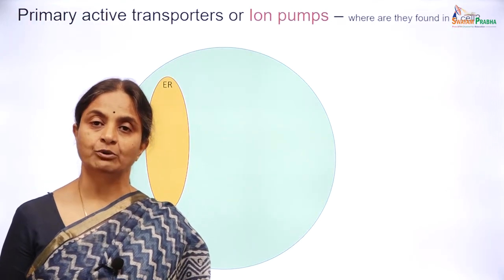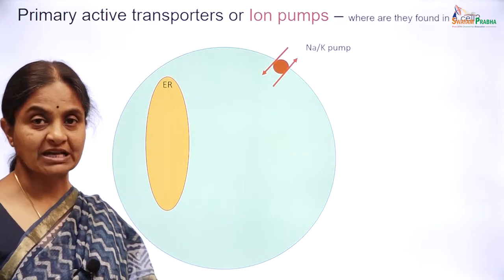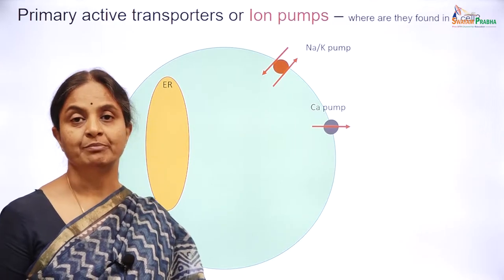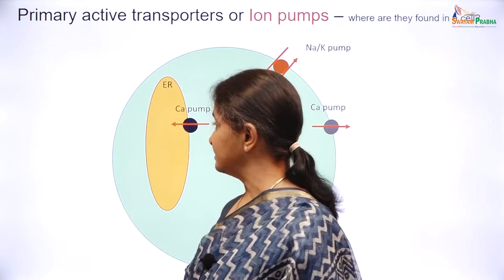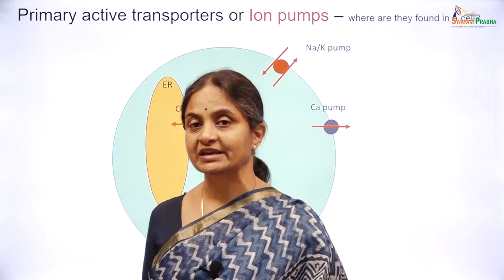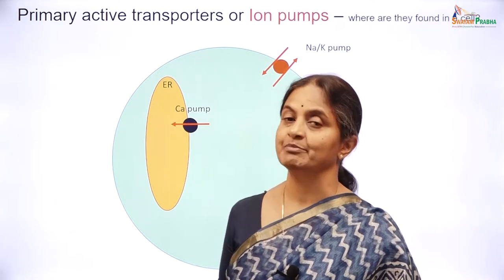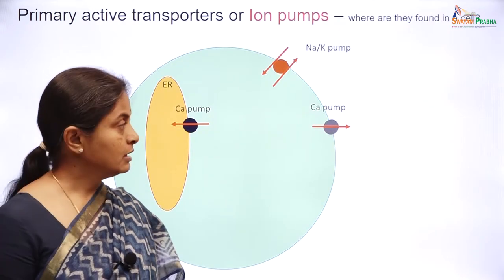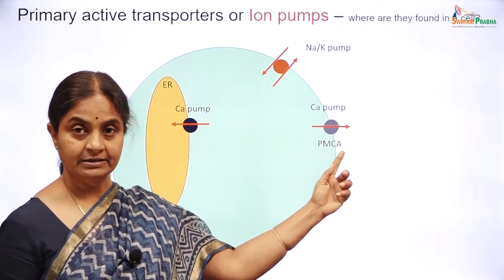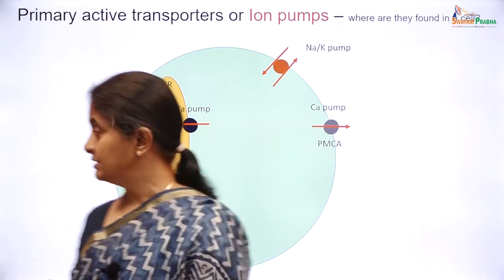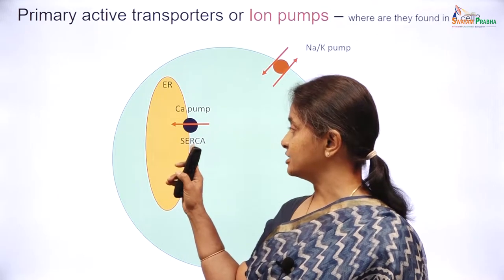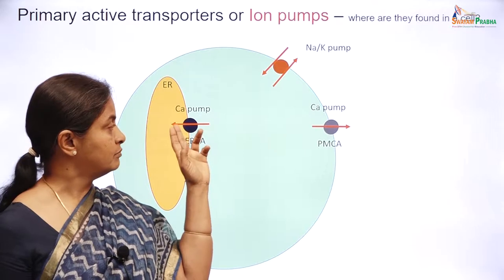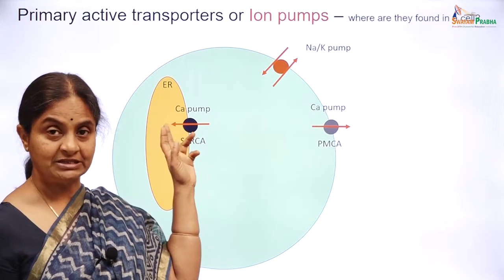Where are ion pumps found in a cell? The sodium-potassium pump is found on the plasma membrane and is present ubiquitously in all eukaryotic cells. There is also a calcium pump on the plasma membrane. Another important calcium pump is found on the endoplasmic reticulum membrane — called sarcoplasmic reticulum in muscle cells. These two calcium pumps differ in their sequences: the plasma membrane one is called PMCA (plasma membrane calcium ATPase), while the other is called SERCA (sarco-endoplasmic reticulum calcium ATPase). Calcium moves actively from the cytoplasm into the ER through the SERCA pump.